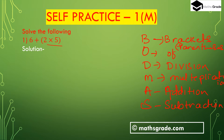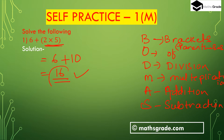First, calculate inside the bracket: 2 multiplied with 5 is 10. Now add this value: 6 plus 10 is 16. So our answer is 16. So 6 plus (2 multiplied with 5) is 16.